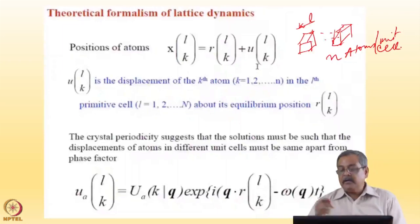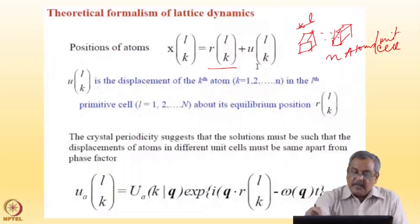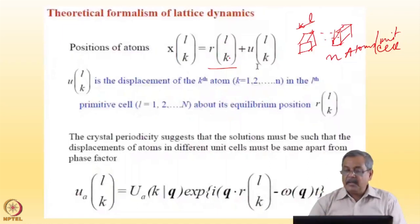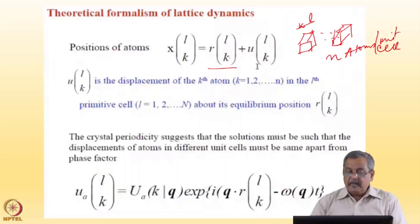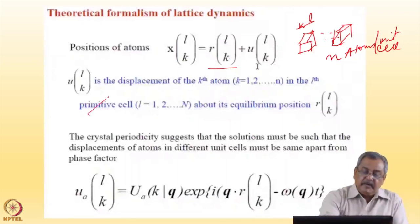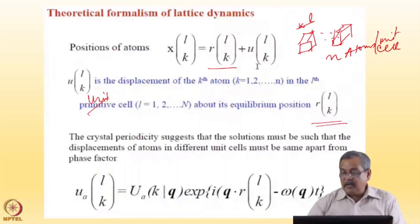n can be 2, can be 3. The k-th atom in the l-th unit cell is given by its equilibrium position R_lk — that means the k-th atom in the l-th unit cell — plus a displacement vector U_lk. U_lk is the displacement vector of the k-th atom in the l-th unit cell. L goes from 1 to N, and this displacement is about its equilibrium position at the l-th unit cell for the k-th atom.